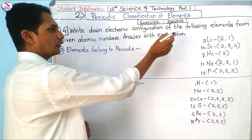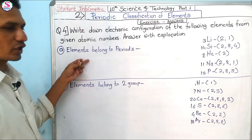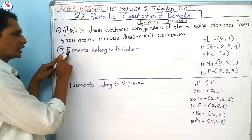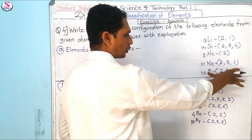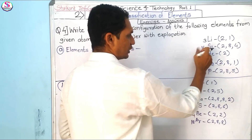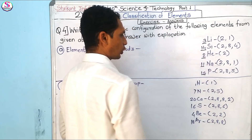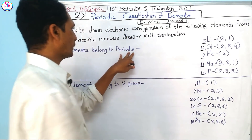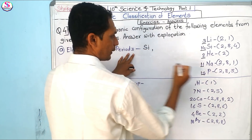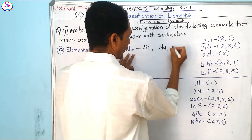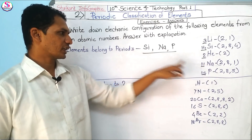Now for Question 4, we need to write down the electron configuration of the following elements from given atomic numbers. The first sub-question asks which elements belong to Period 3. Based on their electronic configurations, the Period 3 elements among the options are silicon, sodium, and phosphorus, because they contain 3 orbits.